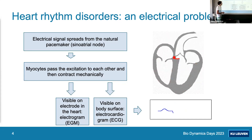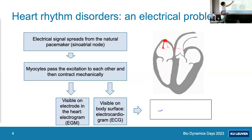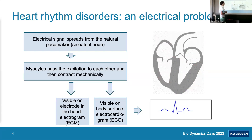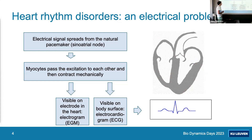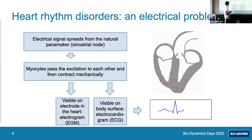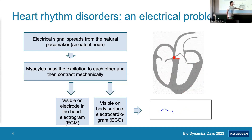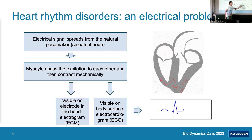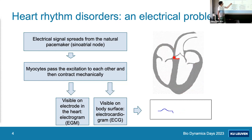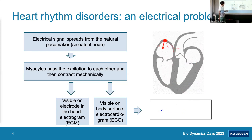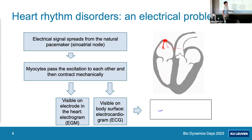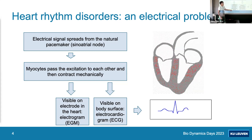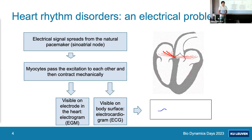The signal triggering mechanical contraction is electrical depolarization. The wave propagating through the heart can be thought of as a collection of electrical dipoles. Measuring potentials on the body surface is called the electrocardiogram (ECG); measuring potentials close to the heart, for example during surgery, is called an intracardiac electrogram.